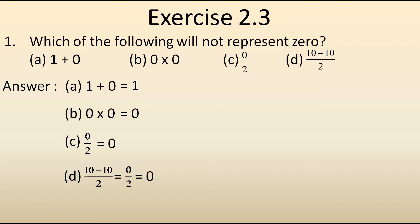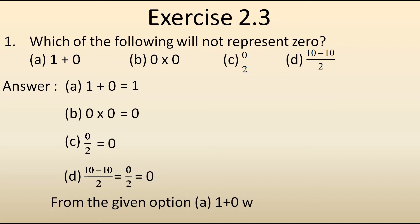So from the given options, option A — 1 plus 0 — will not represent 0 because it gives the answer as 1. But the remaining equations are giving the answer as 0. Now let's move to the second question.